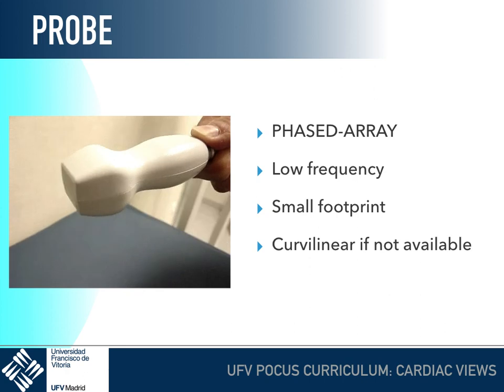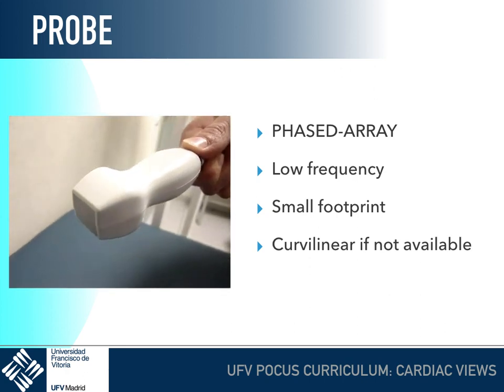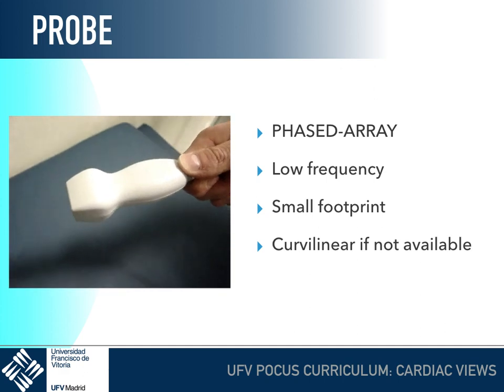First of all, the probe. We need to choose an adequate probe to obtain good images, and this probe is the phased array. It's a low-frequency probe with a really small footprint, able to get inside the intercostal space. If we don't have this probe available, we can use the curvilinear probe as well, but the image quality will not be as good as using the phased array probe.